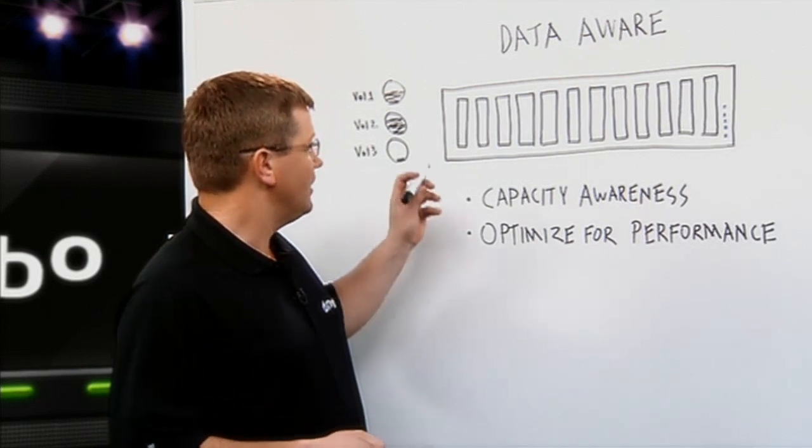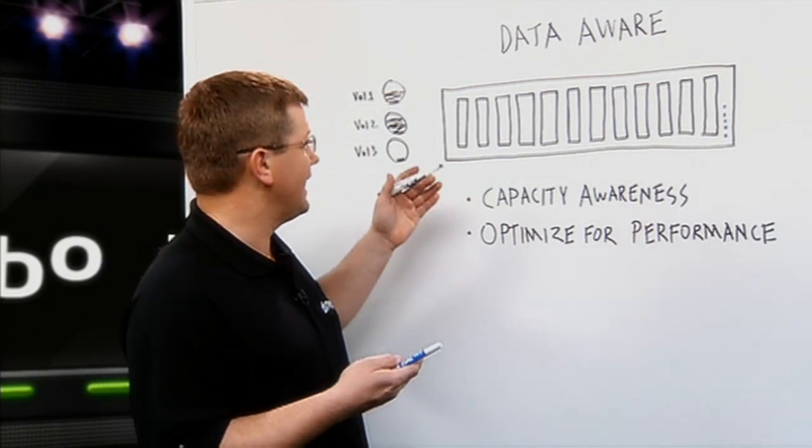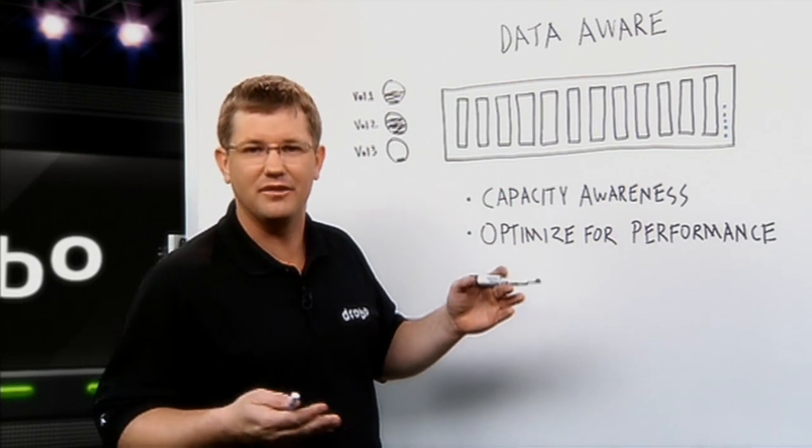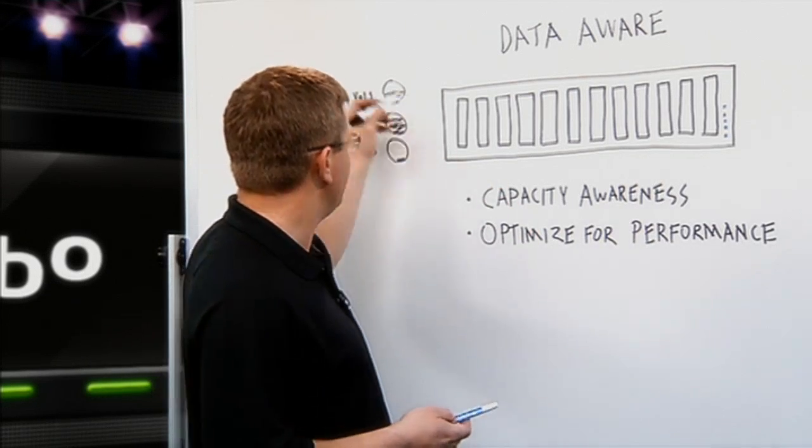That type of data, traditional hard disk drives and large wide stripes with parity data, like traditionally a RAID 5 type setup, handle really well. So that data may come in and go into a RAID 5 stripe.